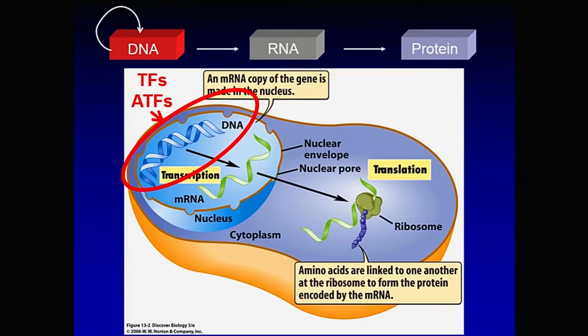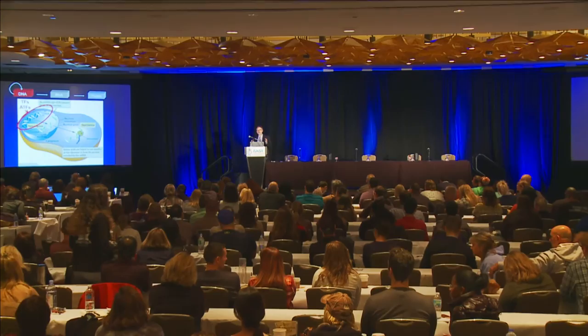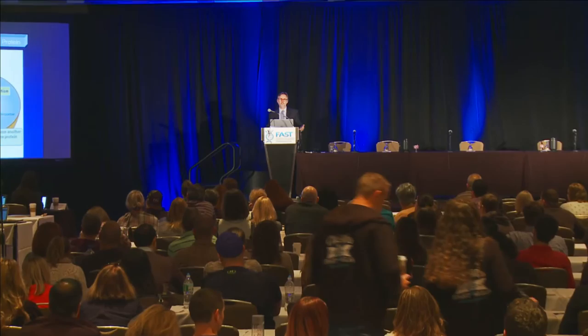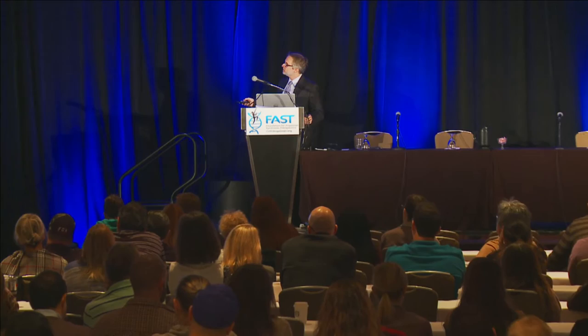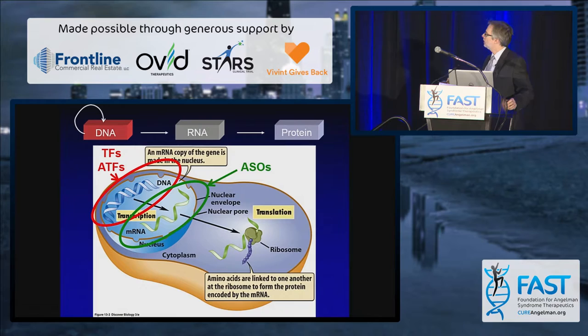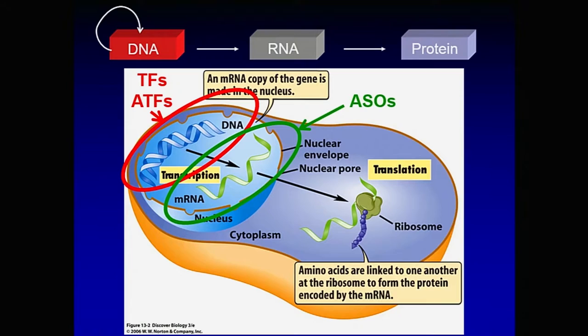The artificial transcription factors work on the level of the DNA — they control which genes are going to be turned on, which genes are going to be making RNA, and which genes are going to be shut off. But we can also work on a second level: after the RNA is made, we can work on controlling the RNA, because if we could control the RNA in some way, that can also either allow these proteins to be made or not made. These antisense oligonucleotides work on this RNA level.